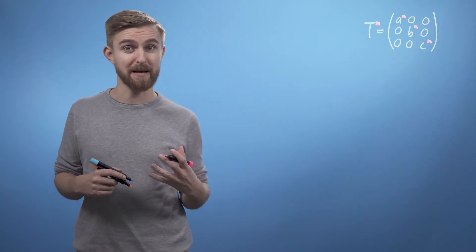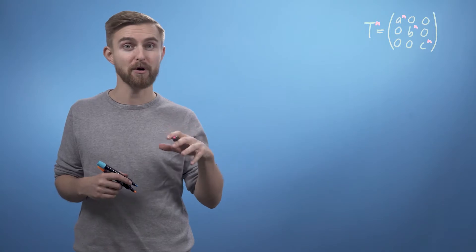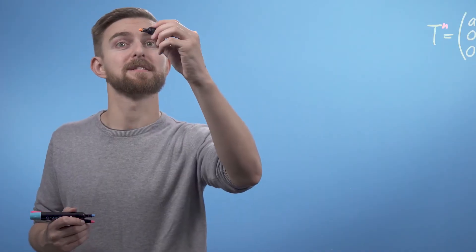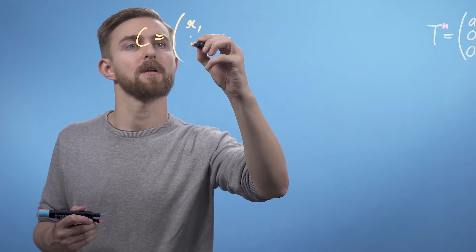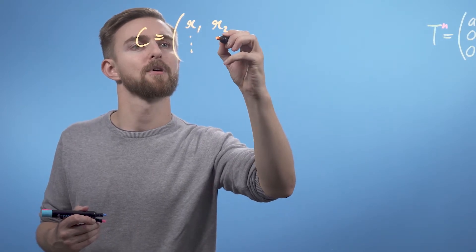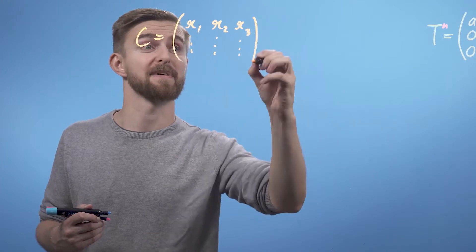As we saw in the section on changing basis, each column of our transform matrix simply represents the new location of the transformed unit vectors. So to build our eigenbasis conversion matrix, we just plug in each of our eigenvectors as columns. C equals eigenvector 1, eigenvector 2, and eigenvector 3, in this case, as we're using a three-dimensional example.